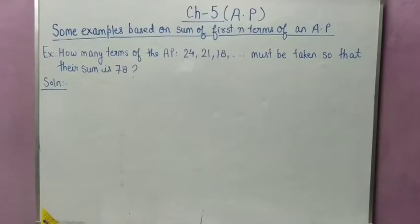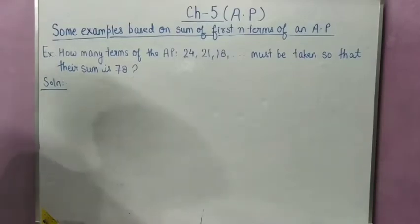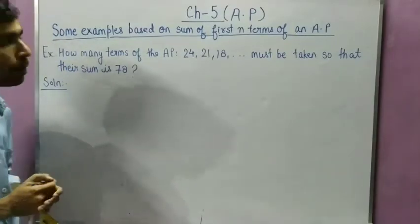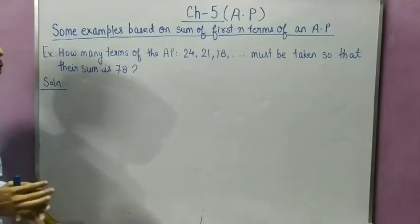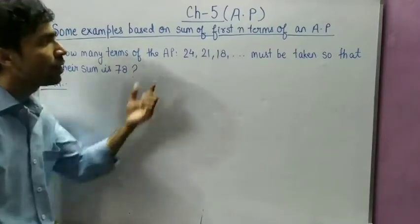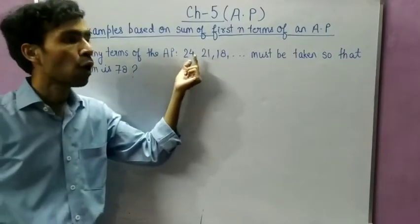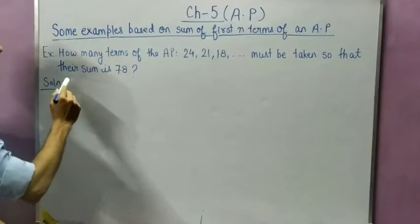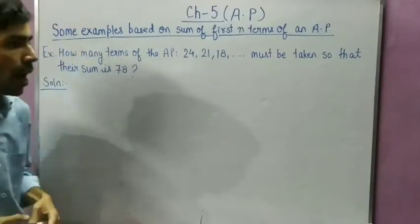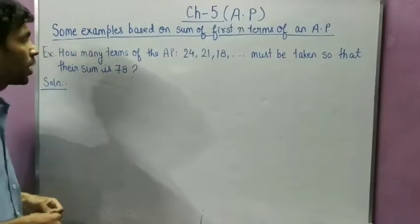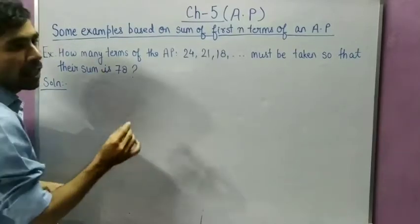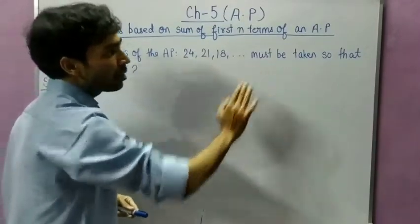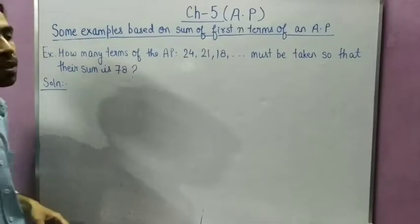Now, the next example: how many terms of the AP 24, 21, 18 and so on must be taken so that their sum is 78? In other words, how many terms of this AP can be added so that their sum will be equal to 78?